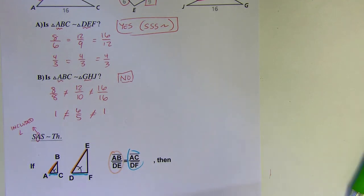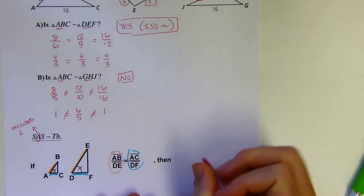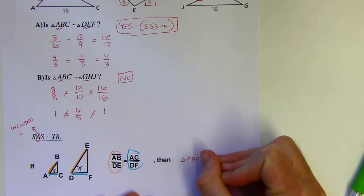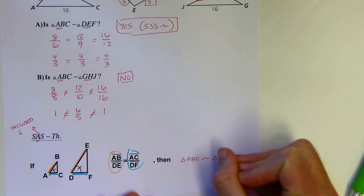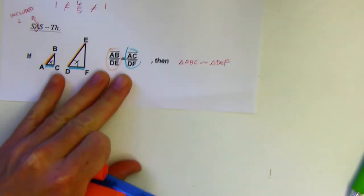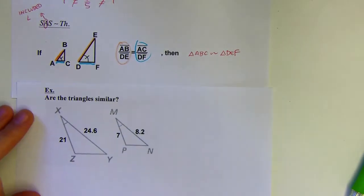So when that happens, you guessed it, the triangles are going to end up being similar. So triangle ABC is similar to triangle DEF. And with that in mind, on the next page, let's try another problem.